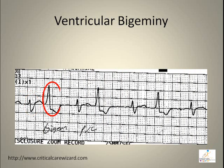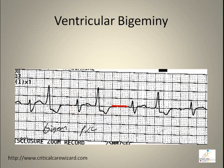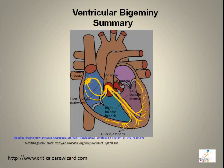PVCs that alternate with intrinsic rhythm, with an irregular rhythm, is called ventricular bigemini — alternating with an intrinsic beat.